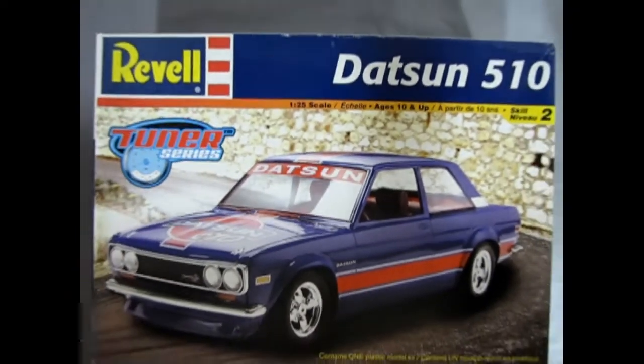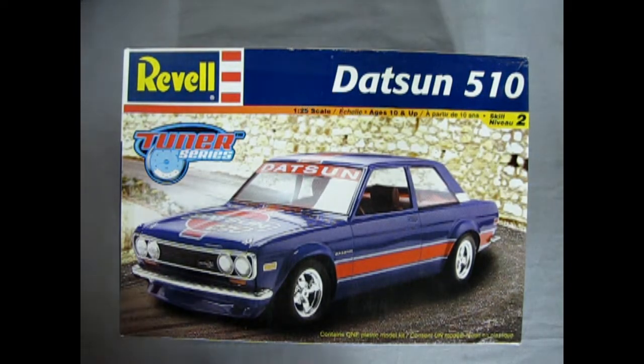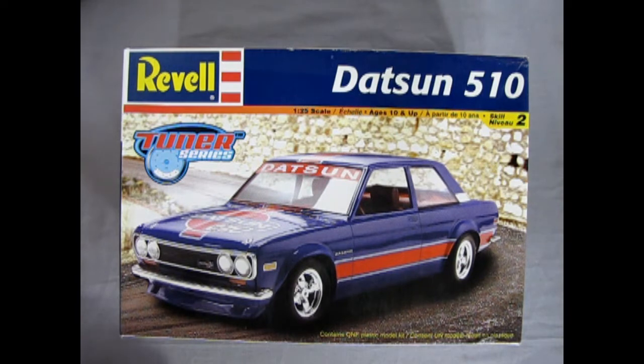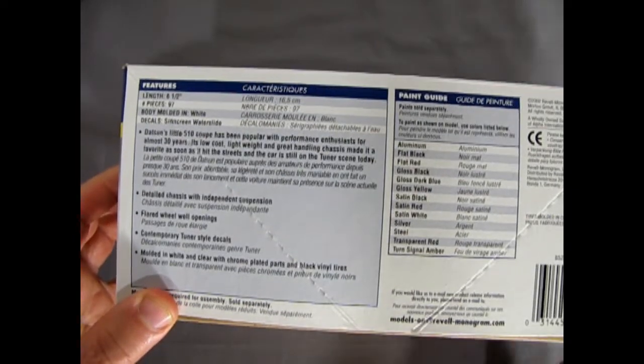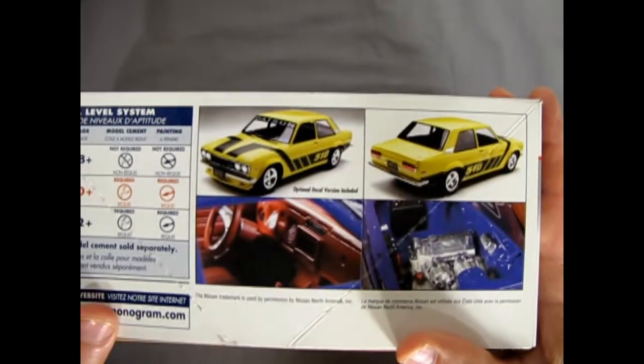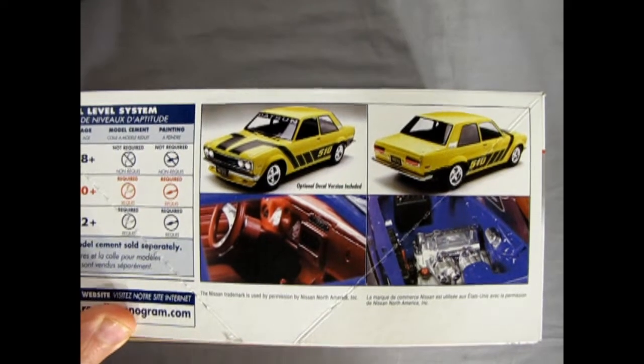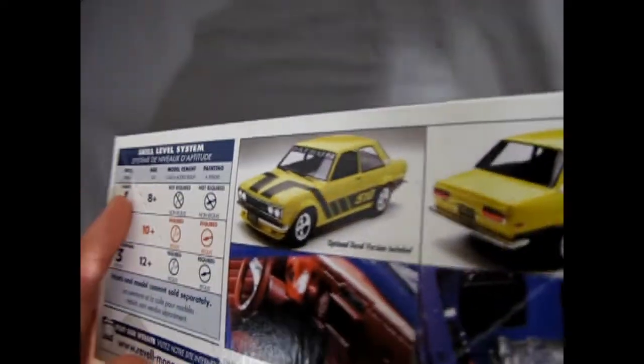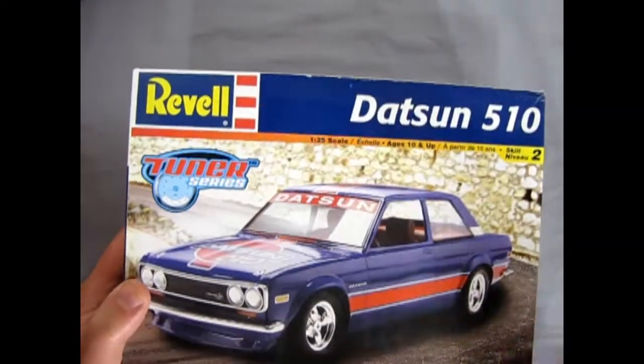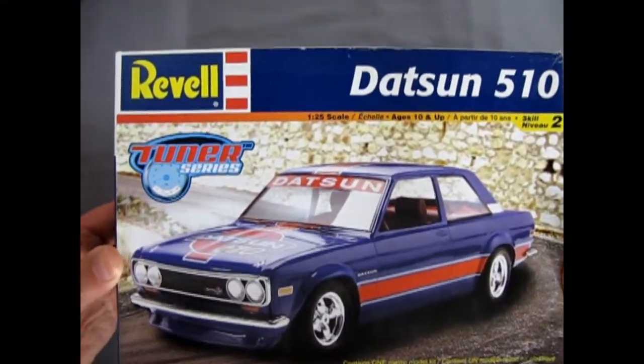Now we wind the clock all the way back to 1968 where we get to see our first Japanese import model kit on this show which of course is the Datsun 510. My sister had one of these as a real car back in the 80s. This model kit is from Revell. It was made in 2002. There's the call out sheet of everything that's happening with this model. You get the yellow Datsun 510 option here which is cool and then the red and blue one, the tuner edition which is on the box. Of course the end of the box looks much like the front.